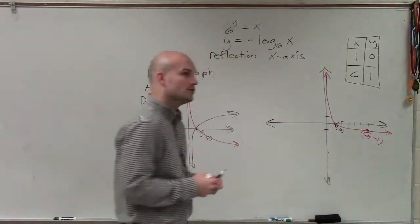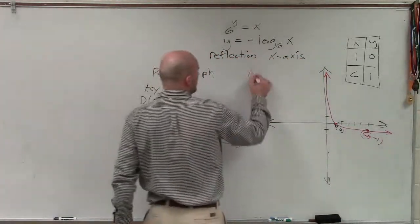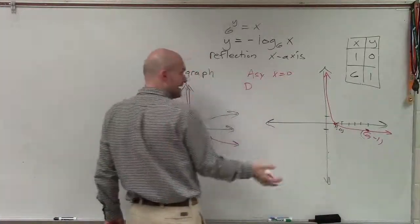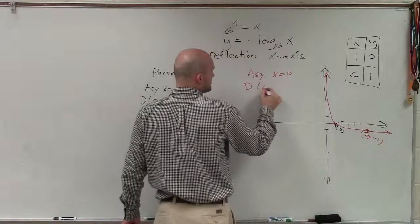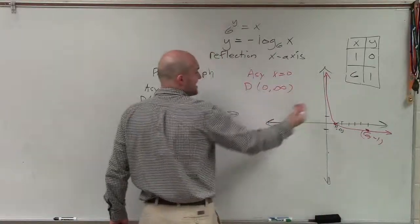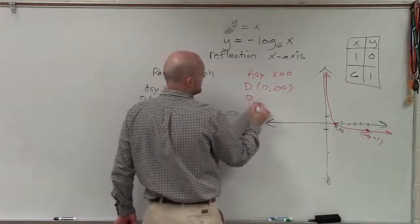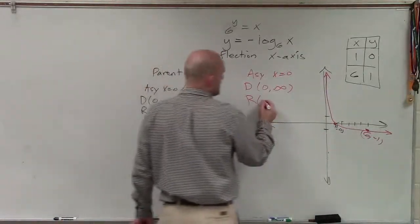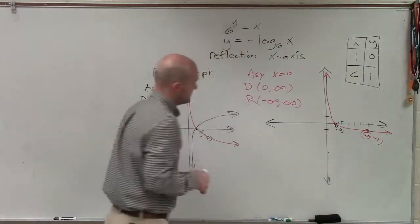And now we can go and look at our asymptote. Well, my asymptote hasn't shifted at all. So my asymptote is still going to be at x equals 0. My domain, you can see, is my graph is still going to be from 0 to infinity. I don't have any negative values for my domain. And my range is still going to go all the way up and then all the way down. So therefore, my range will still be from negative infinity to positive infinity.